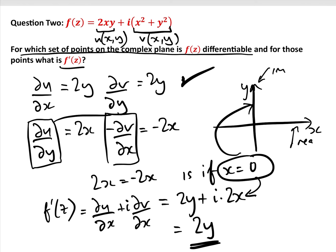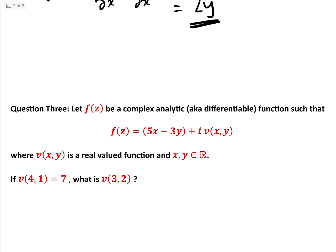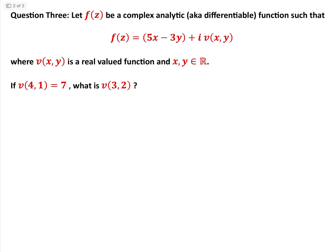That's the answer to question two. Now question three: f(z) is a complex analytic — i.e. differentiable — function such that f(z) = (5x - 3y) + i·v(x,y), where v is a real-valued function. If v(4,1) = 7, what is v(3,2)? This is a question from a GRE subject mathematics test.